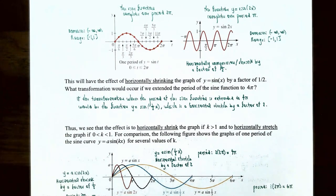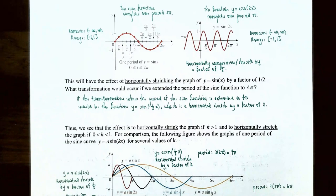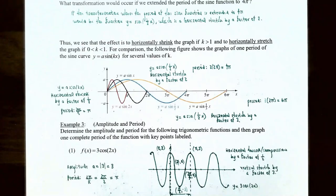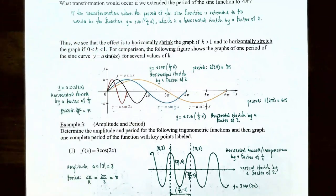If the period of the sine function is extended from 2π to 4π, we would have y = sin(½x), which is a horizontal stretch by a factor of 2. So a horizontal shrink occurs when k > 1, and a horizontal stretch occurs when 0 < k < 1.